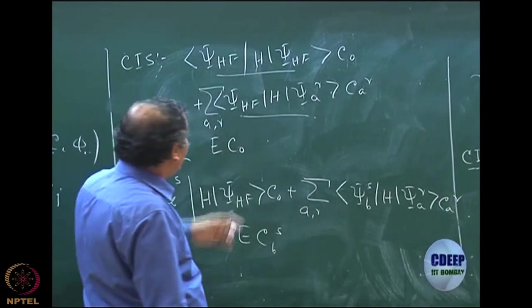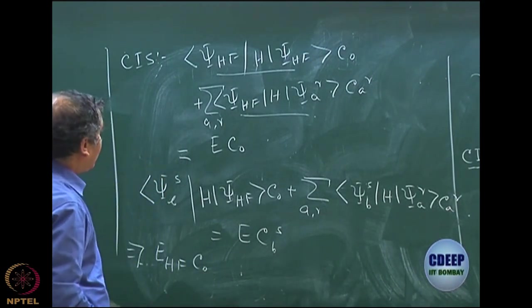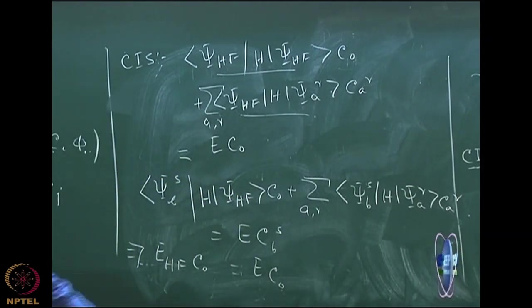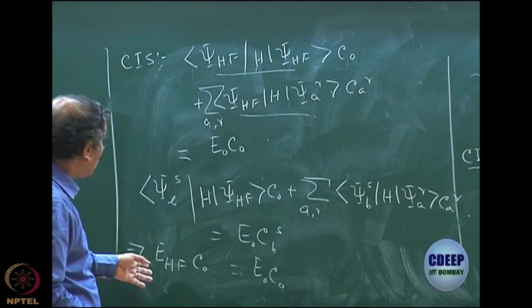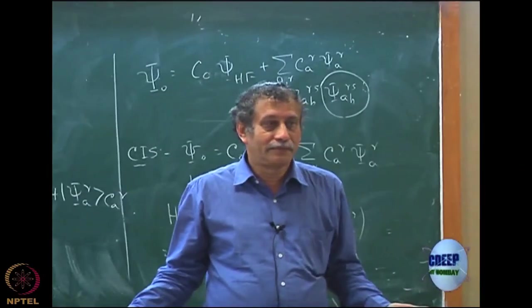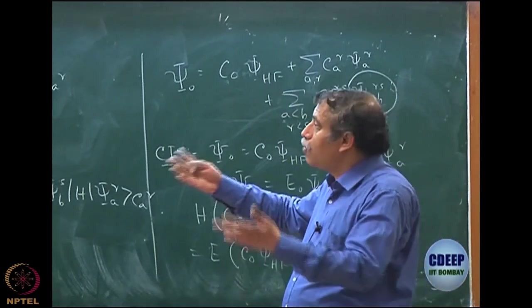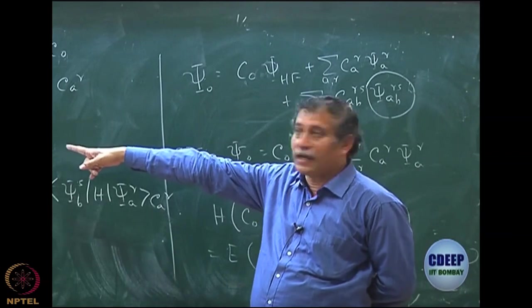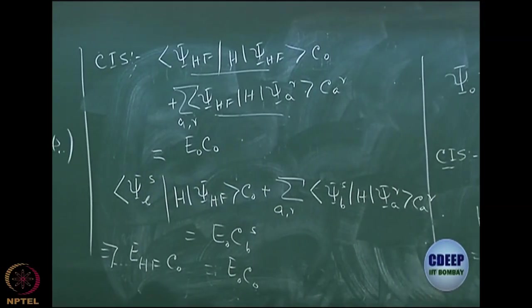Looking at these equations: my first term is E_HF times C_0, and the second term — <psi_HF|H|psi_AR> — is 0 because of Brillouin's theorem. So I have E_HF C_0 = E C_0, meaning E_0 equals E_HF. Without doing anything for the second equation, I already have the trivial result that my exact ground state energy is nothing but Hartree-Fock. My ground state energy does not improve at all. That is the reason CIS is never practiced for ground state.